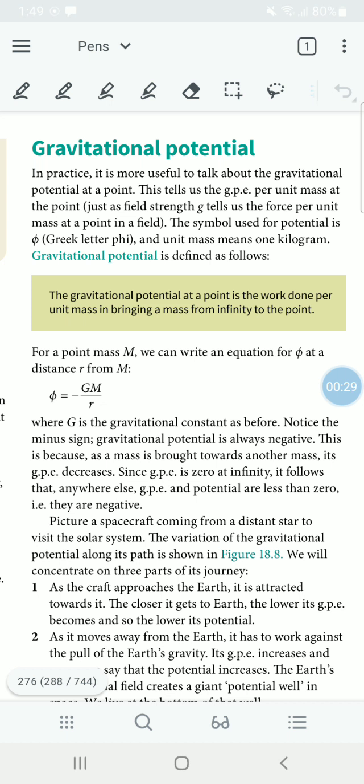Write: The gravitational potential at a point is the work done per unit mass in bringing a mass from infinity to the point. Leave a line and write: For point mass M, the gravitational potential φ at a distance r from M.